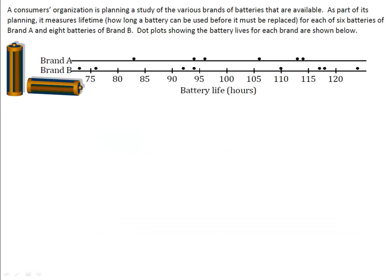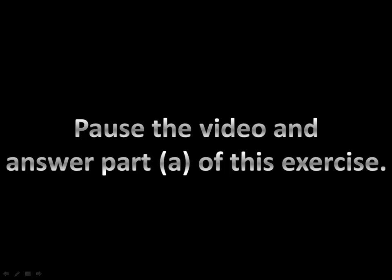In our first exercise, a consumer's organization is conducting an experiment to find out the life expectancy of batteries, comparing brand A with brand B. They record the data showing how long each battery lived — six brand A batteries and eight brand B batteries. The results are plotted on a dot plot. How can we compare the two batteries by discussing their variability? Please pause the video here and answer part A of this exercise.